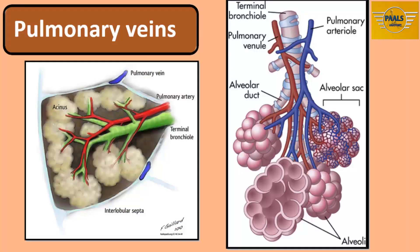The pulmonary veins drain oxygenated blood from the lungs. There are two pulmonary veins on each side, just like the bronchial veins. The pulmonary veins do not accompany the pulmonary arteries — tributaries of the pulmonary veins are intersegmental, while branches of the pulmonary arteries are segmental in distribution.